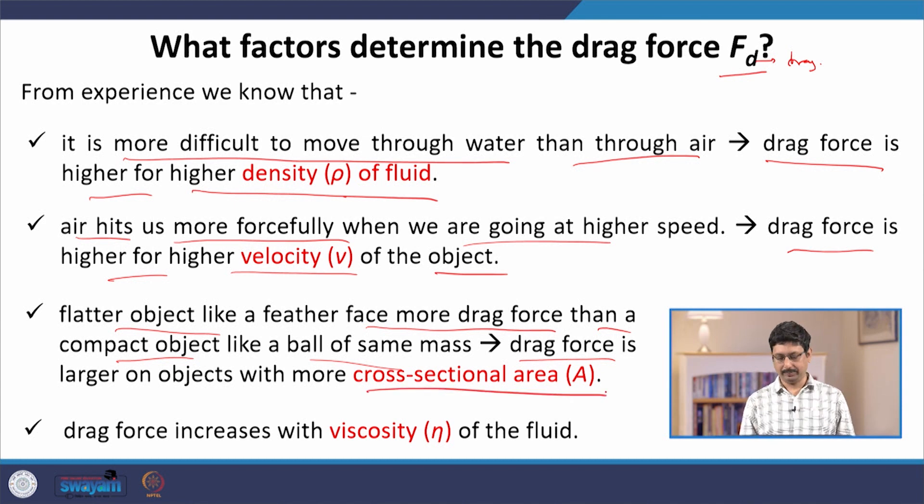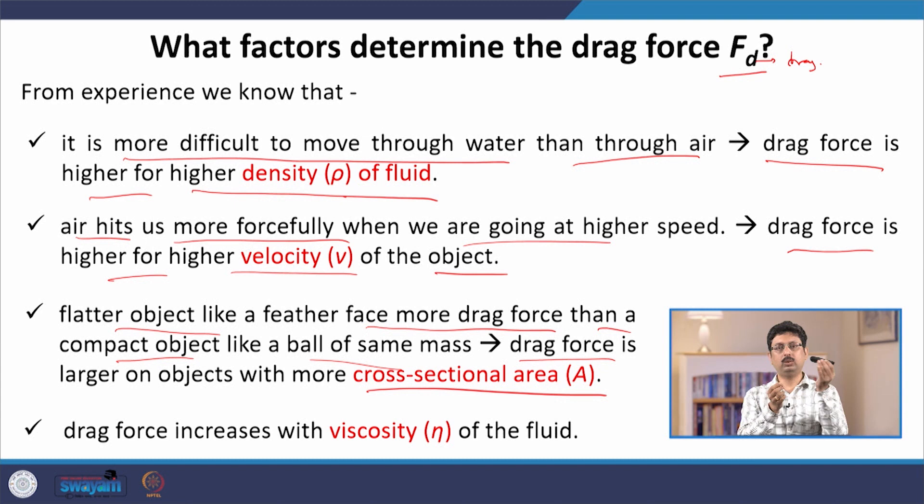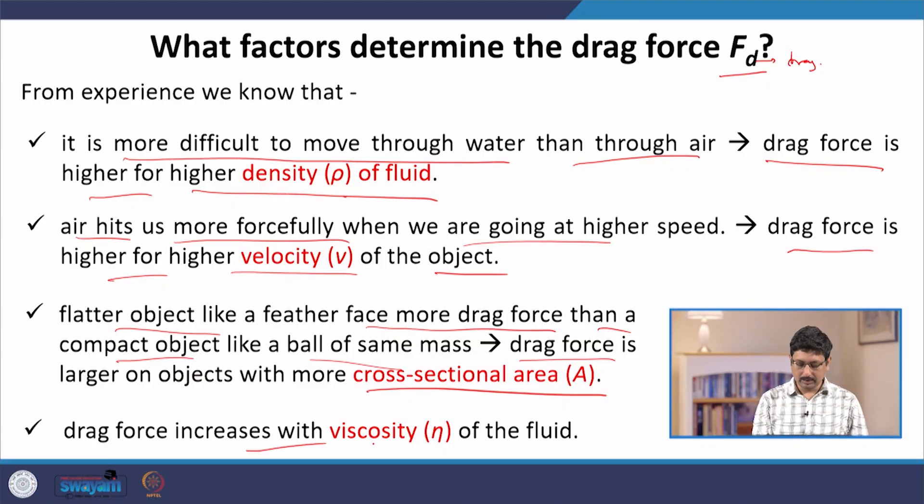Cross-sectional area means: suppose this is some object moving through air in this orientation — if you make a cut of this object perpendicular to the direction of velocity, the area of that cut is the cross-section. For example, if the object is oriented one way, the cross-section is small; if oriented another way, the cross-section covers the entire area and the drag force will be higher. Finally, we know that the drag force also increases with the viscosity of the fluid. These are the factors that we expect should determine the drag force.